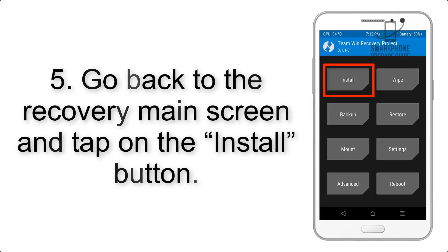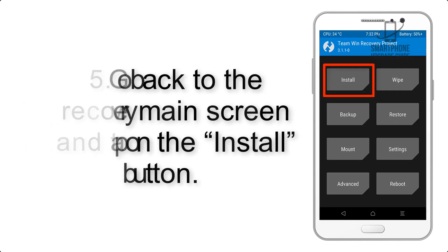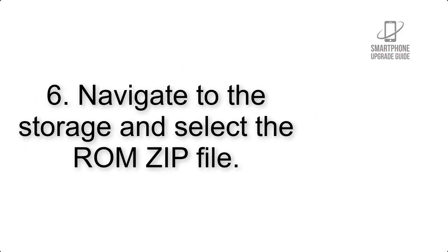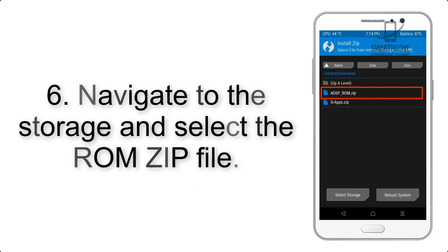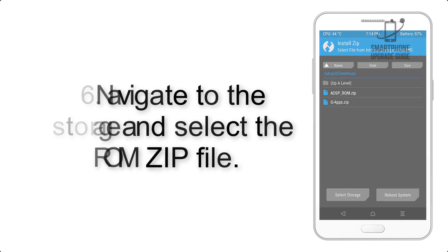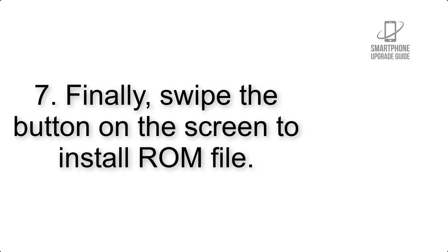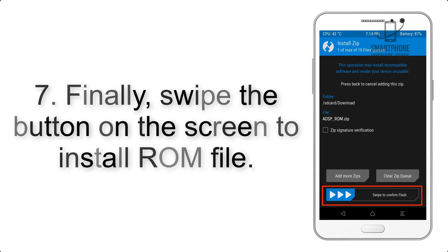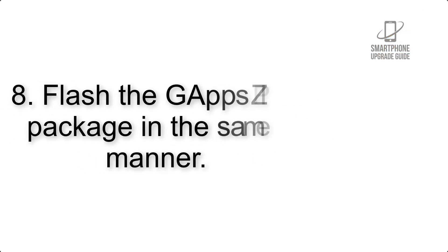Step 5: Go back to the recovery main screen and tap on the Install button. Step 6: Navigate to the storage and select the ROM zip file. Step 7: Finally, swipe the button on the screen to install the ROM file.